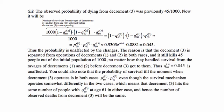The reason is that the probability of survival until decrement 3 operates equals p'₆₀⁽¹⁾ × p'₆₀⁽²⁾ in both cases, even though the survival mechanism operates somewhat differently. Decrement 3 hits the same number of people in either case; hence the number of observed deaths from decrement 3 is exactly the same, and q⁽³⁾₆₀ = 0.045 is unaffected.